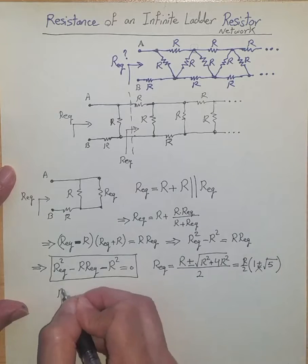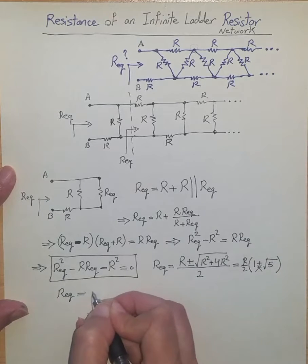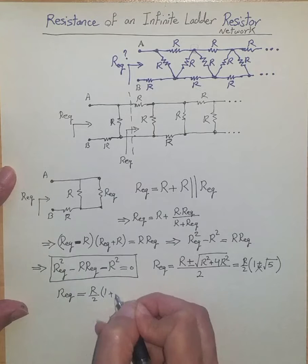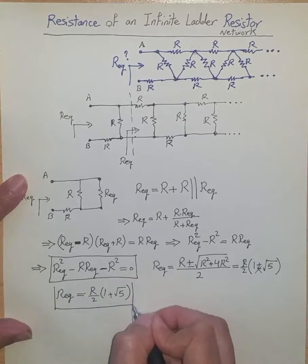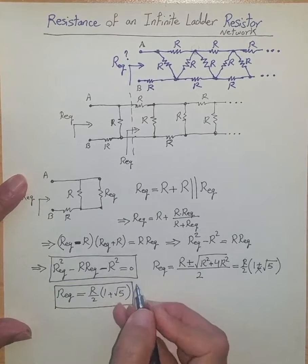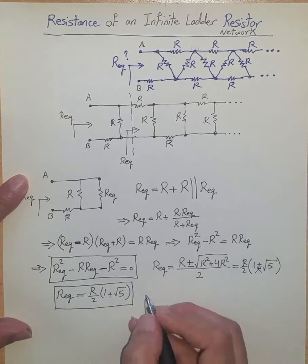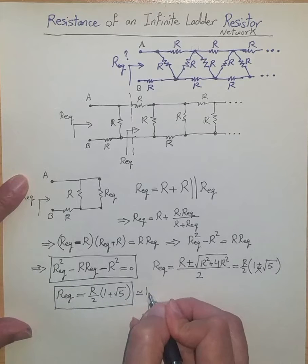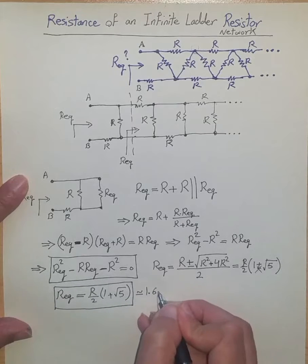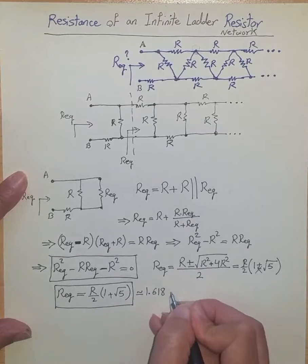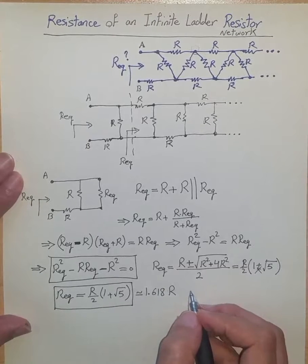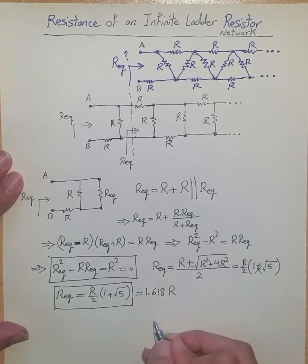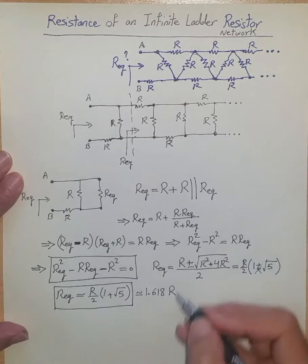One minus square root of five is not acceptable — that's a negative value, and a resistor can't be negative for a passive resistive network, so the minus sign is not acceptable. Therefore, the equivalent resistance of this network is R over two times one plus square root of five. The exact value is 1.618 times R.